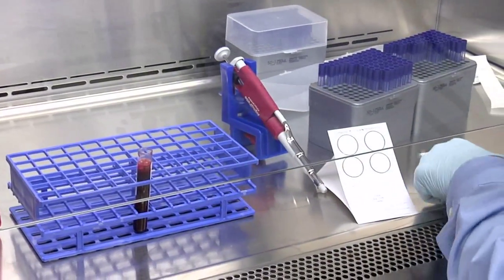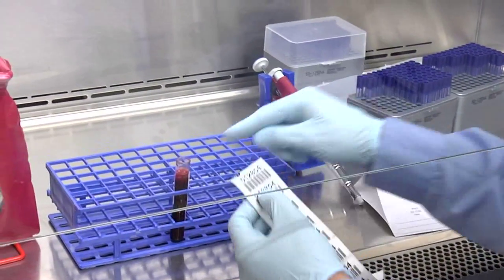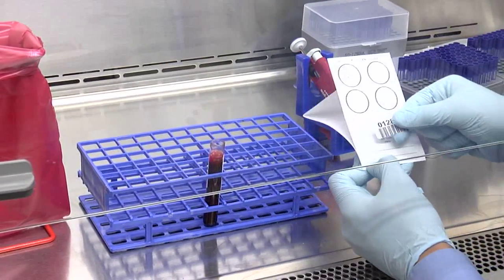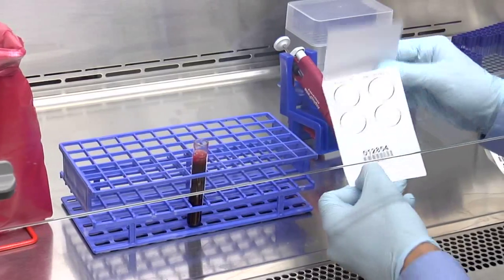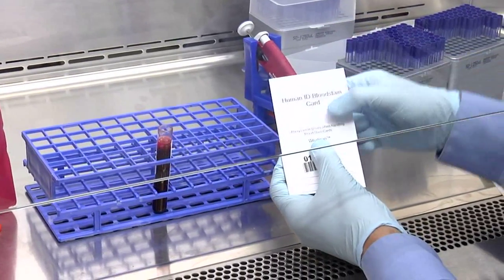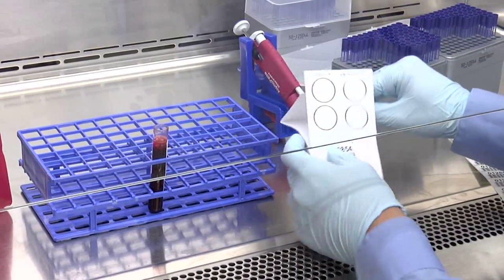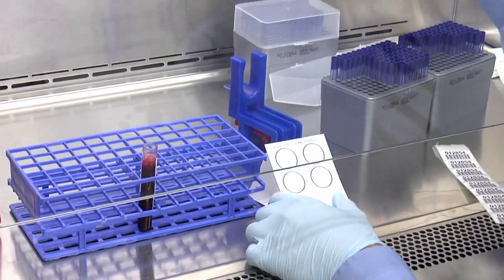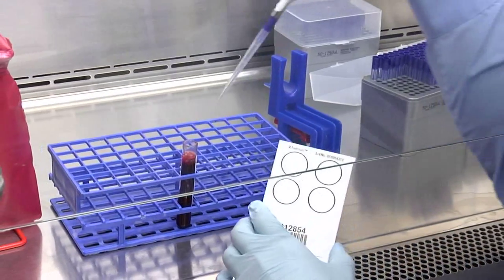Take a coat that corresponds to the sample and place it on the filter paper. This is a human ID blood stain card. Start placing the sample onto the filter paper.